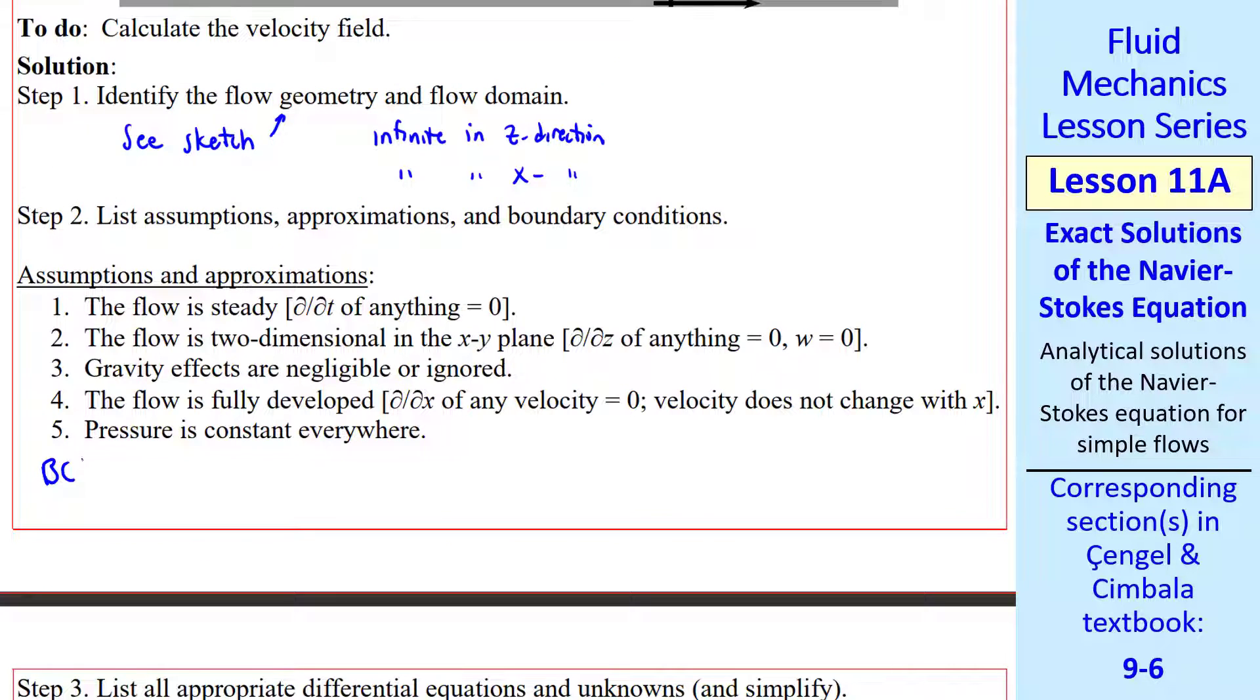Now the boundary conditions. At y equals zero, both u and v components must equal zero. This is the no-slip condition at the bottom wall. And at y equals h, u equals v, and little v equals zero. Again, there's no slip at the upper wall.